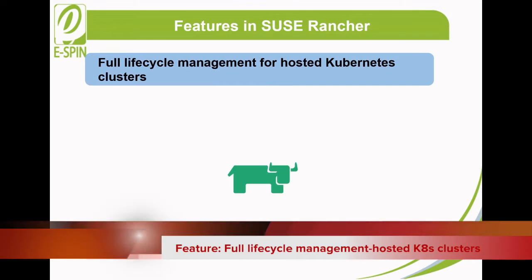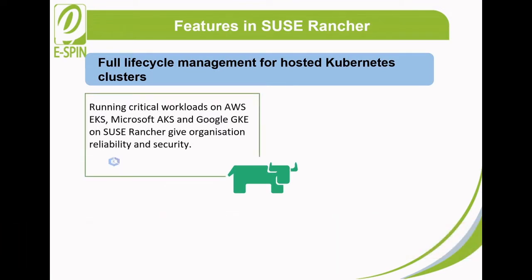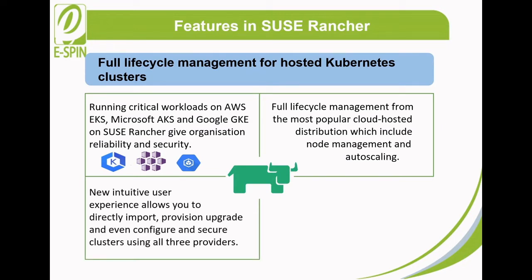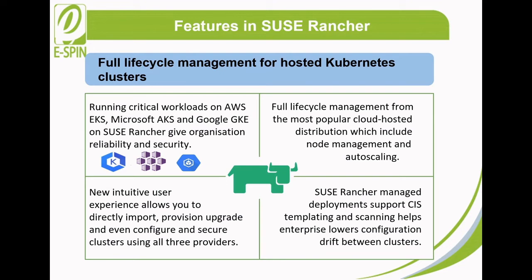Full lifecycle management for hosted Kubernetes clusters. Running critical workloads on AWS EKS, Microsoft AKS, and Google GKE on SUSE Rancher gives your organizations reliability and security. SUSE Rancher provides full lifecycle management from the most popular cloud-hosted distributions, which includes node management and autoscaling, all achievable from a single pane of glass. The new intuitive user experience allows you to directly import, provision, upgrade, and configure and secure clusters using all three providers. In addition, SUSE Rancher managed deployments support CIS templating and scanning, which helps enterprises lower configuration drift between clusters.